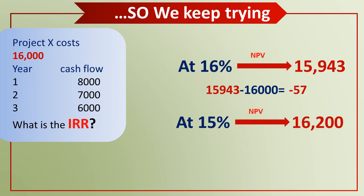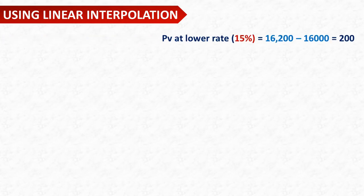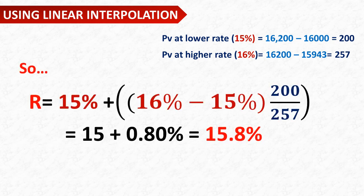The calculation is the same as how you calculate NPV. At 15%, the NPV is $16,200 minus $16,000, which gives us positive $200. A positive NPV means that the true rate of return lies between 15% and 16%. So the next step is to find a close approximation using linear interpolation. The NPV at the lower rate (15%) gives us $200, and the NPV range between rates is $257. The IRR formula is: 15% + (16% − 15%) × (200 ÷ 257).